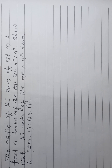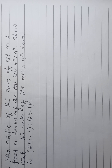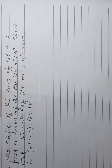The ratio of the sum of the first m and first n terms of an AP is m² : n². Show that the ratio of its mth and nth term is (2m - 1) : (2n - 1).